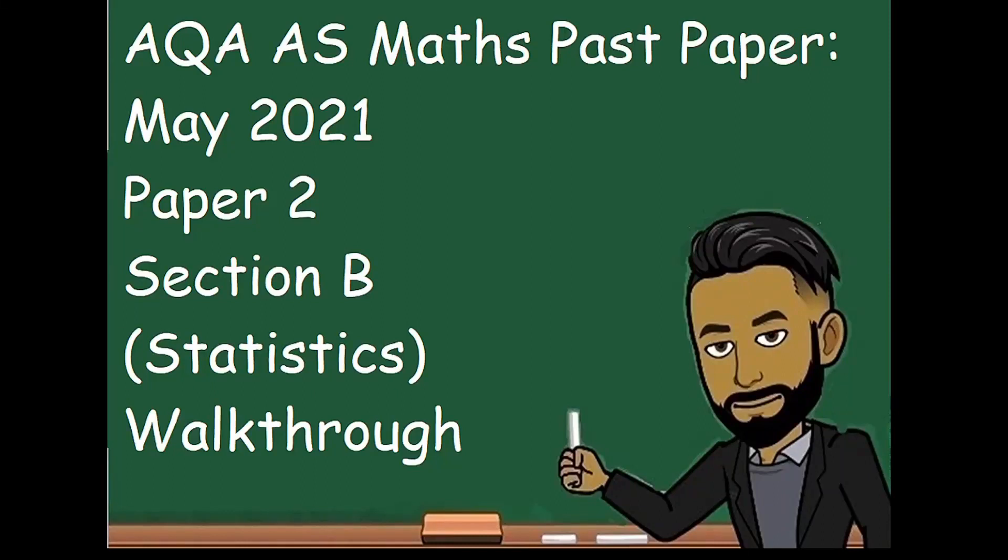Welcome to this latest video on 162 maths. In this video we'll be doing the AQA AS maths past paper of May 2021 paper 2 section B, which is the statistics section. As always, I'll include a question breakdown so you can see which topic refers to which question to make your revision that little bit easier.